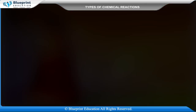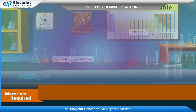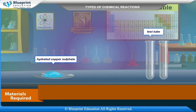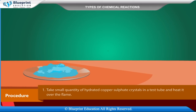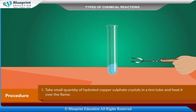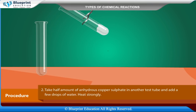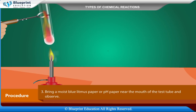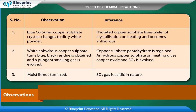Experiment D — Heating of copper sulphate. Our aim is to carry out the reaction of heating of copper sulphate. Materials required: hydrated copper sulphate, test tube, test tube holder, Bunsen burner, and pH paper or blue litmus paper. Procedure: Take a small quantity of hydrated copper sulphate crystals in a test tube and heat over the flame. Take half the amount of anhydrous copper sulphate in another test tube, add a few drops of water, heat strongly, and bring moist blue litmus paper near the mouth of the test tube.